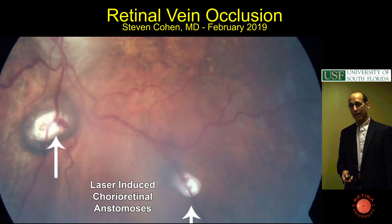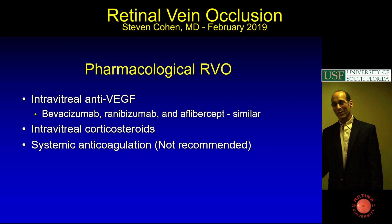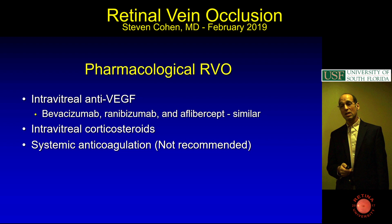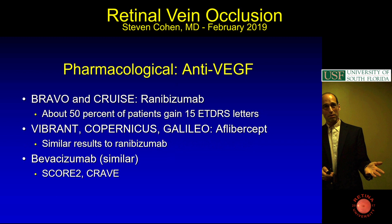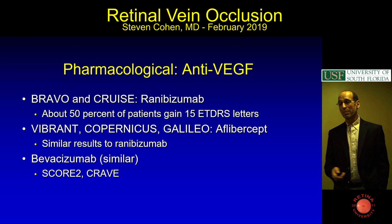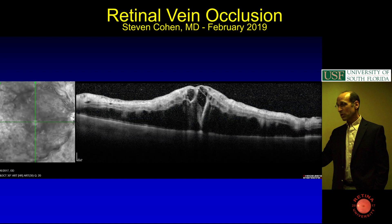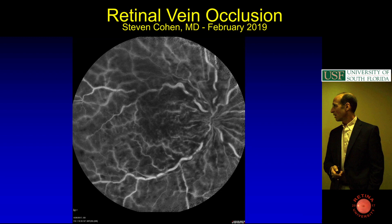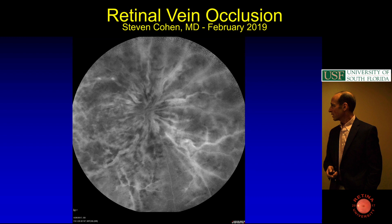For pharmacological treatment of RVO: all anti-VEGFs work and give similar results; intravitreal corticosteroids also work. Systemic anticoagulation is not recommended. The BRAVO and CRUISE studies were for Lucentis—BRAVO is branch retinal vein occlusion, CRUISE is central retinal vein occlusion—and about 50% of patients gained letters. There were also good studies for aflibercept and bevacizumab. One patient came in at 5/200 with ischemic central vein occlusion; after treatment his macula dried within a month and vision improved to 20/80—document pretreatment vision and central thickness.